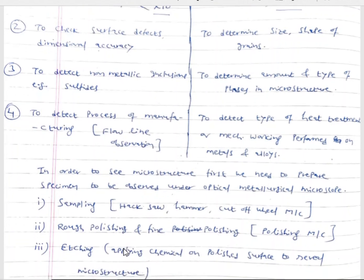The second step in specimen preparation is finishing or polishing operation. Initially, rough polishing may be performed with the help of a belt grinder, and fine polishing may be performed on a single disk polishing machine. An abrasive paper is fixed on the polishing disk, which is driven by an electric motor. You just place the specimen on the surface of this rotating disk and automatically the polishing takes place.